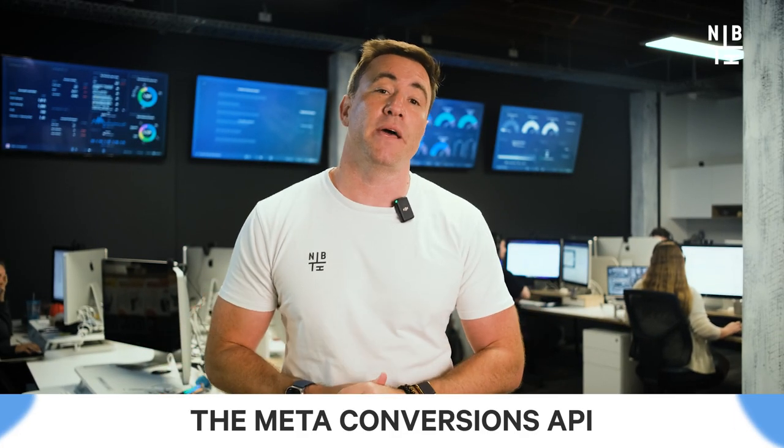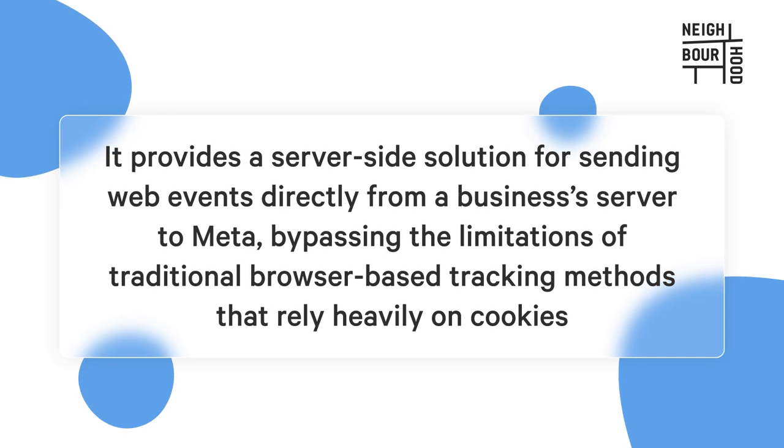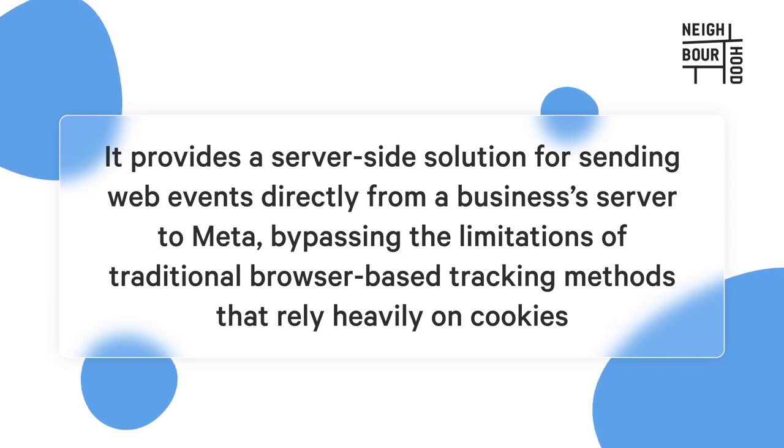The Meta Conversions API is a cutting-edge new tool developed by Meta, formerly Facebook, to revolutionize how businesses track, analyze, and optimize their marketing efforts. It provides a server-side solution for sending web events directly from businesses' servers to Meta, bypassing the limitations of traditional browser-based tracking methods that rely heavily on cookies. This approach is increasingly important in the digital landscape where privacy regulations and browser restrictions are making cookie-based tracking less effective.